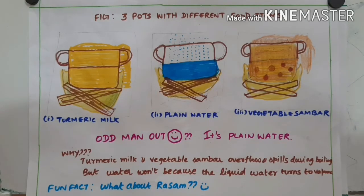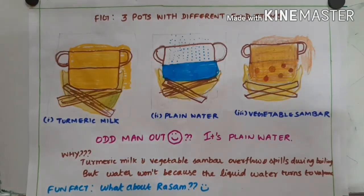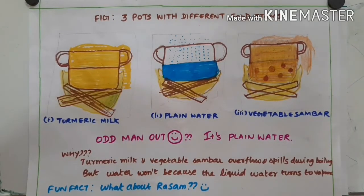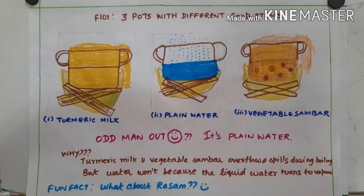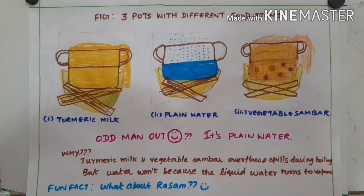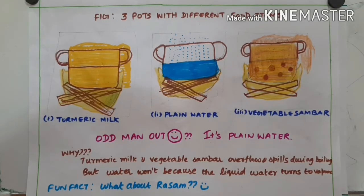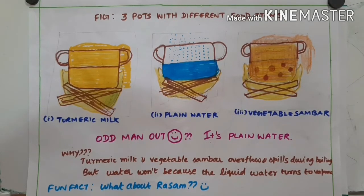I asked my dad about these conditions. He mentioned that when the atmospheric pressure reduces, water starts to become gas even below 100 degrees Celsius, which we can observe during mountain hiking. When the pressure increases, it will take more heat to become gas, which happens in a pressure cooker.